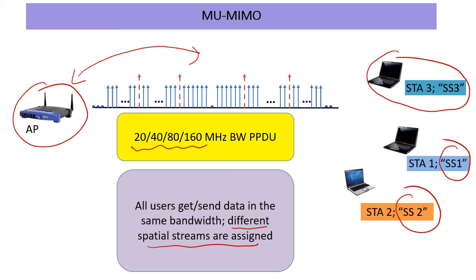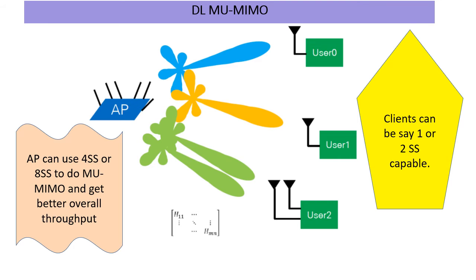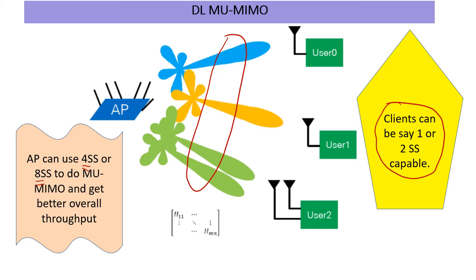Let's look at some downlink and uplink nuances and see where it can help. On downlink MU-MIMO, clients are probably going to be 1 or 2 SS capable, but the AP, with its higher spatial stream capability, can now simultaneously serve multiple clients. I think this will be useful in small indoor environments — for example, in the same room — where people are consuming data on the downlink. This can be quite handy because you can get better overall throughput and experience. The total number of streams served now gets utilized by MU-MIMO.